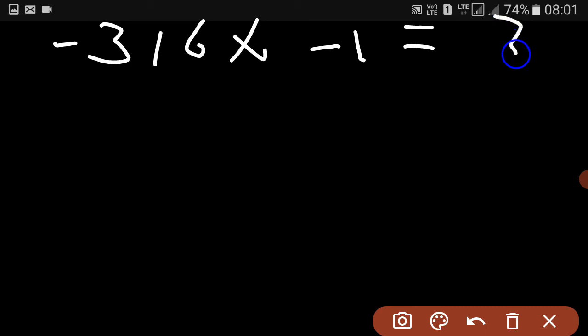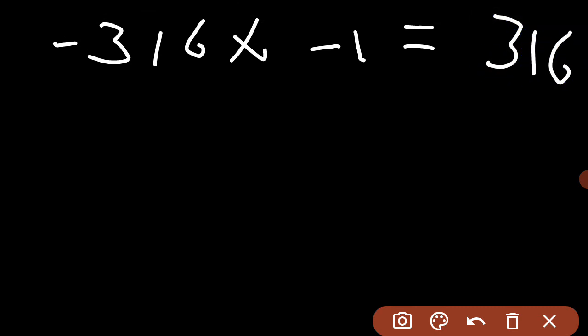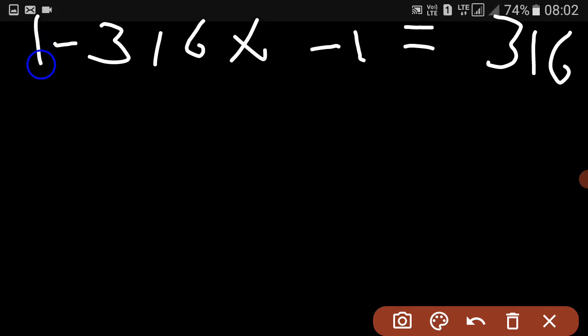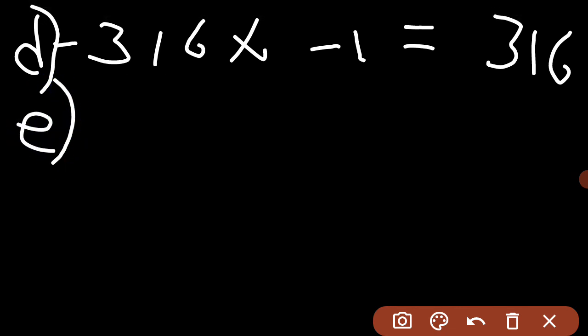Moving on to Part E: minus 15 into 0 into 18. As you know, if any number is multiplied with 0, the answer will be 0.